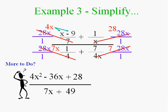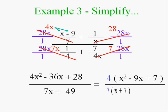Now, I might have more to do here. But I don't know unless I factor. If I factor the top and factor the bottom, in this case, I get 4X squared minus 36X plus 28 over 7X plus 49. And I look at the top and I look at the bottom and nothing can cancel.